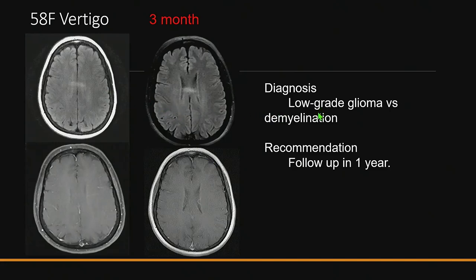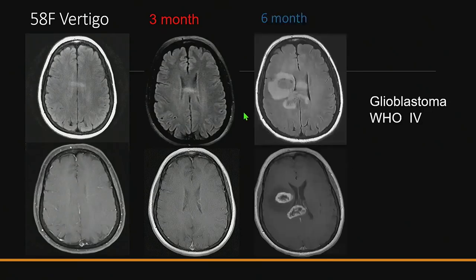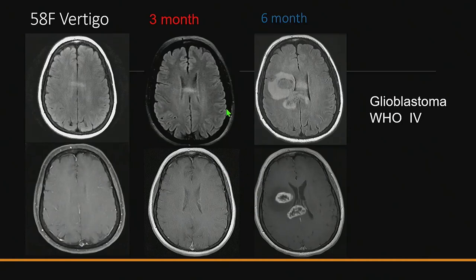The recommendation then was: similar appearance, cannot exclude glioma — it can grow slowly, probably a low-grade glioma since it hasn't changed, or some kind of demyelinating process. The recommendation was a longer-term follow-up at one year. But at six months, before the patient got to the scheduled imaging, they presented with symptoms. Now we're looking at a multifocal necrotic-appearing enhancing mass crossing the corpus callosum — the classic appearance of glioblastoma. My question to the audience: what would you do differently at the initial presentation or at the three-month time point? And would that make a difference to the patient's outcome?